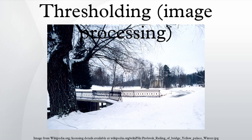Thresholding is the simplest method of image segmentation. From a grayscale image, thresholding can be used to create binary images. The simplest thresholding methods replace each pixel in an image with a black pixel if the image intensity is less than some fixed constant T, or a white pixel if the image intensity is greater than that constant. In the example image on the right, this results in the dark tree becoming completely black, and the white snow becoming completely white.